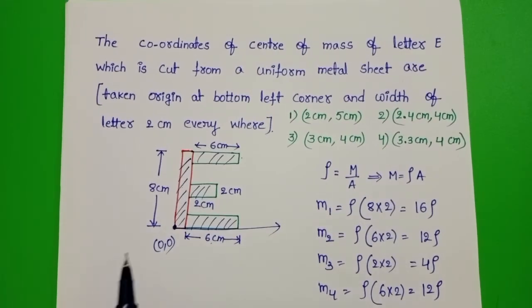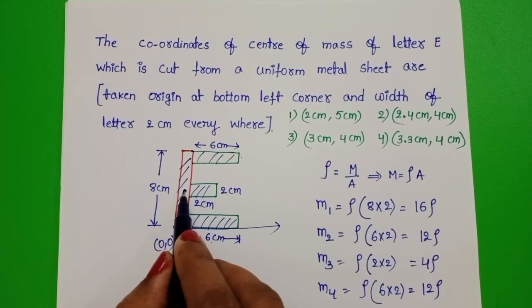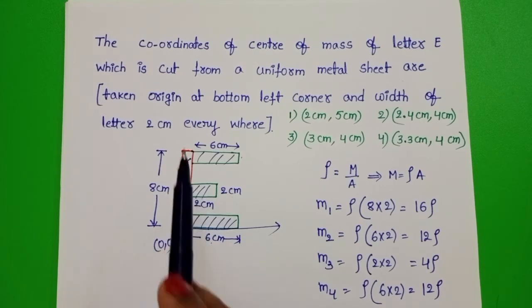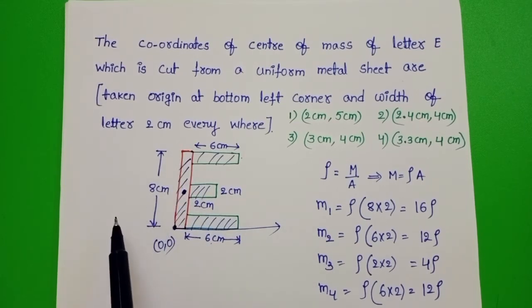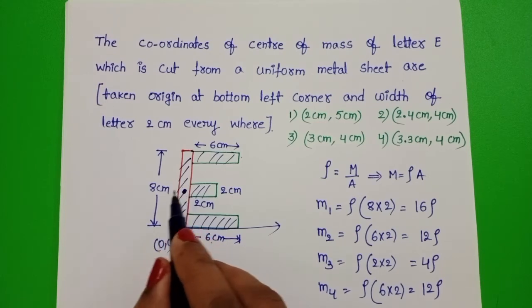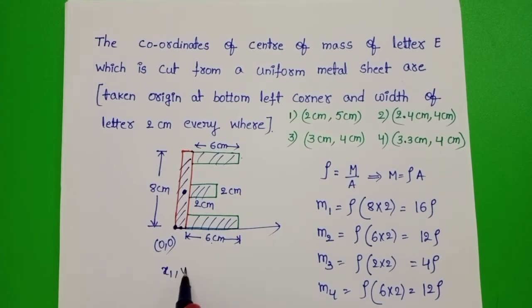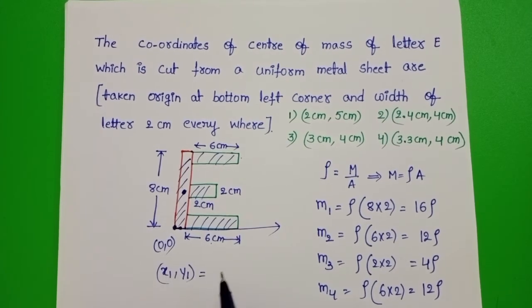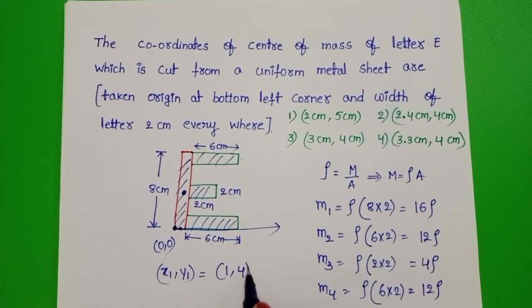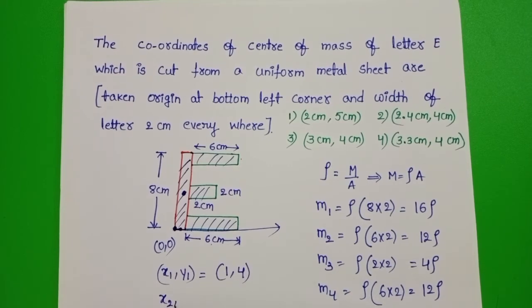And now position of center of mass of the first part. This is position of center of mass. This total length is 8 cm. So y is 4 cm and x is 1 cm. x1, y1 equals 1, 4.